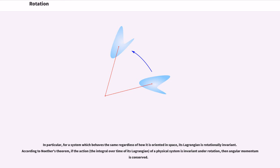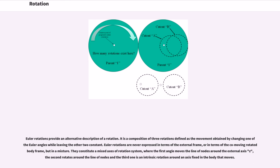Euler rotations provide an alternative description of a rotation. It is a composition of three rotations defined as the movement obtained by changing one of Euler angles while leaving the other two constant. Euler rotations are never expressed in terms of the external frame, or in terms of the co-moving rotated body frame, but in a mixture. They constitute a mixed axis of rotation system.